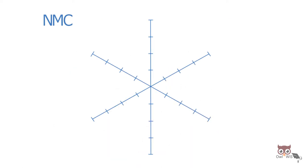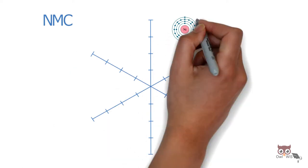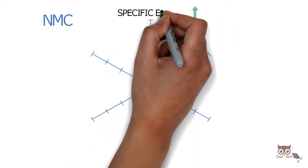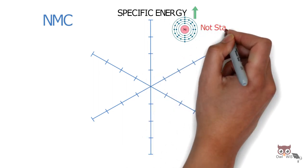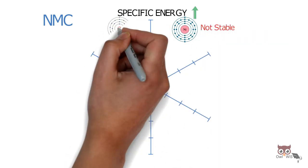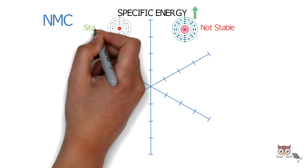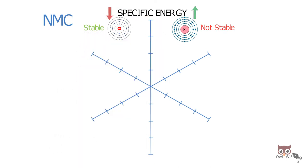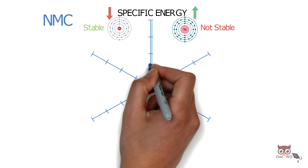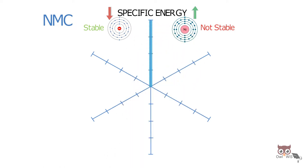NMC parameters: First, nickel has very high specific energy but is not stable. Manganese is stable but has low specific energy. Combining them yields a stable chemistry with very high specific energy.